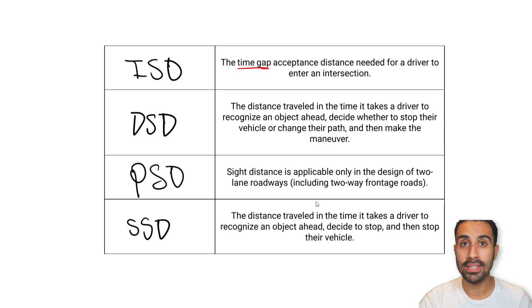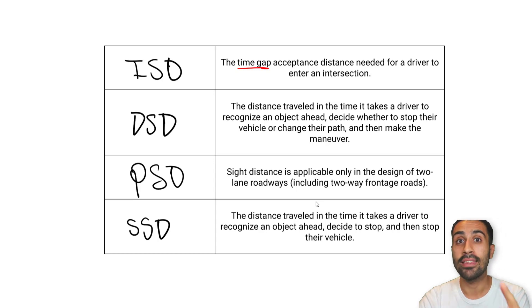So we've answered all of them and now we know about all four types of sight distance. Keep going through these practice problems and thank you for your practice.